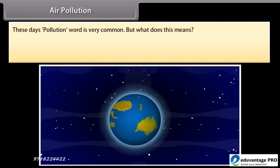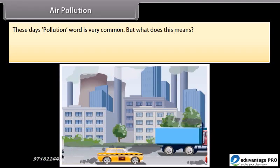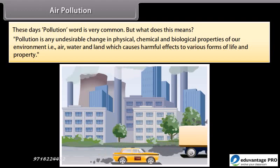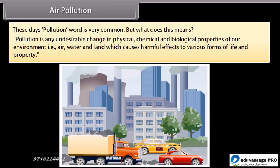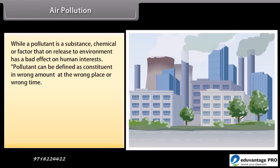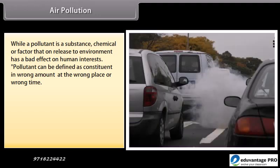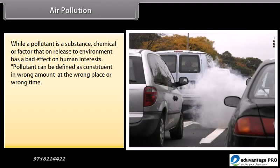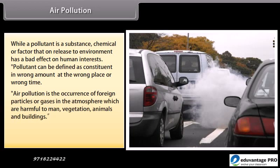Pollution is any undesirable change in physical, chemical and biological properties of our environment — air, water and land — which causes harmful effects to various forms of life and property. A pollutant is a substance, chemical or factor that, when released into the environment, has a bad effect on human interests. A pollutant can be defined as a constituent in the wrong amount, at the wrong place, or at the wrong time. Air pollution is the occurrence of foreign particles or gases in the atmosphere which are harmful to humans, vegetation, animals and buildings.